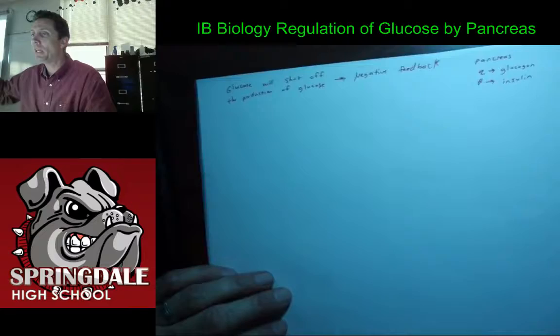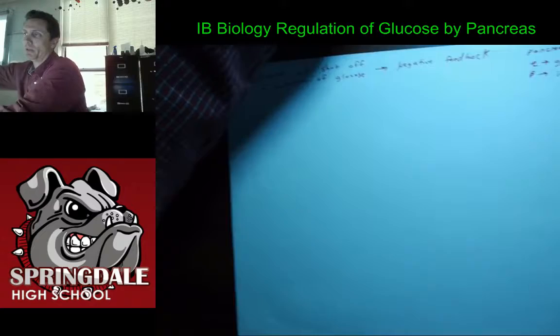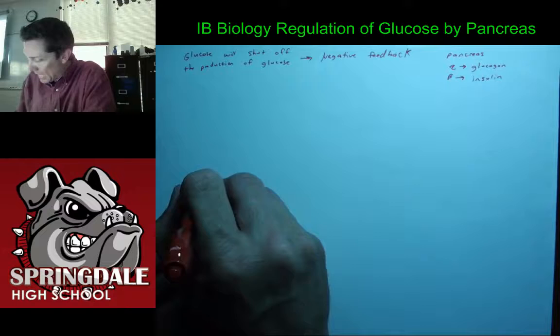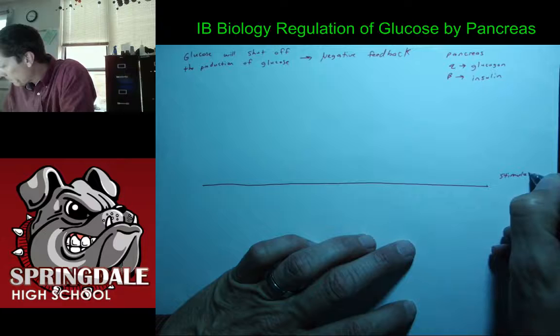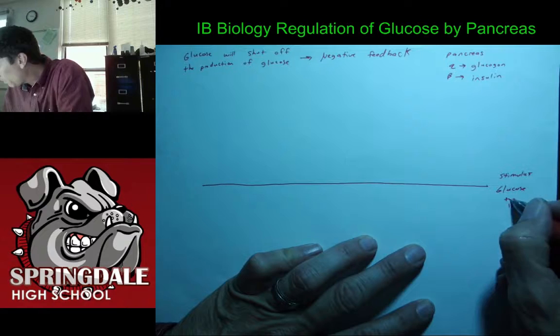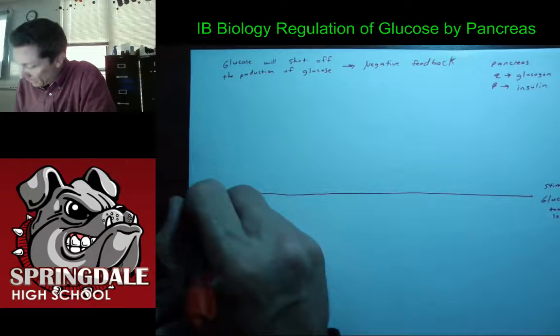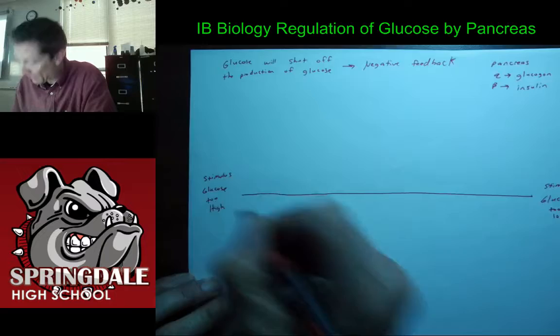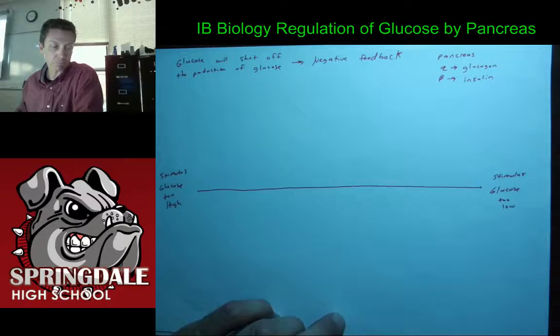No matter what the question is, if you think the discussion is going to be about the pancreas, I want you to draw a dividing line on a piece of paper. Write on one side that the stimulus is that glucose is too low, and on the other side write that the stimulus is glucose is too high. So that's all we've got so far: too low, too high.